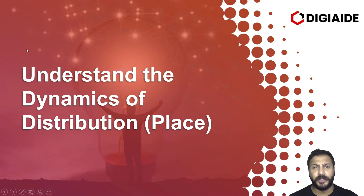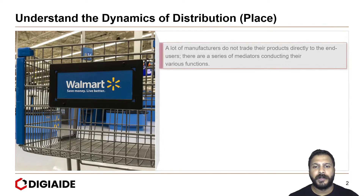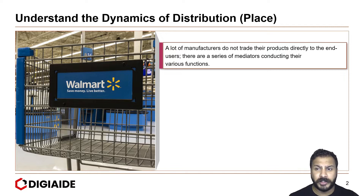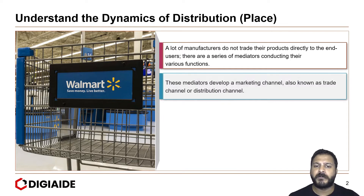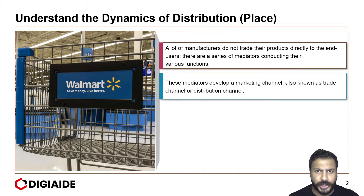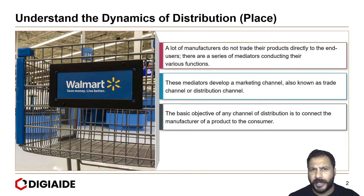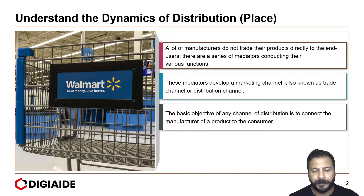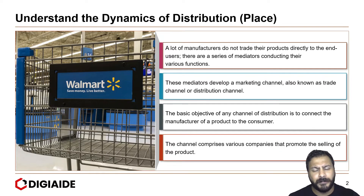Let's understand the dynamics of distribution at its place. A lot of manufacturers do not trade their products directly to end customers. There are a series of mediators or middlemen conducting their various functions. These mediators develop a marketing channel, also known as a trade channel or distribution channel. The basic objective of any channel of distribution is to connect the manufacturer of a product to the consumer.